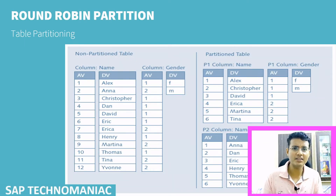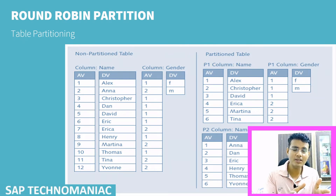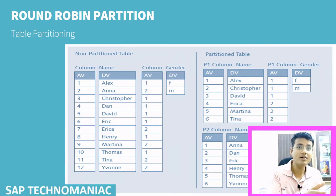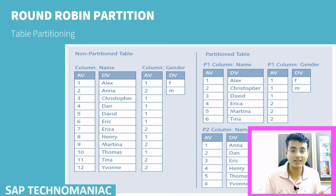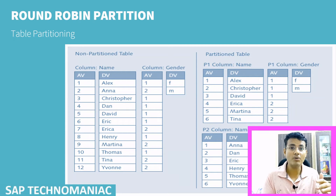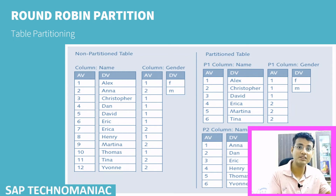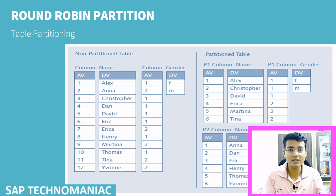There are two ways of doing the partition. First, we can do it vertically — half of the column data we can store in one server and half of the columns in another server. This is called vertical partitioning. Second is horizontal partitioning. In this, we split by number of records — the initial thousand records we store in one server and the next thousand records in another server. This is called horizontal partitioning.